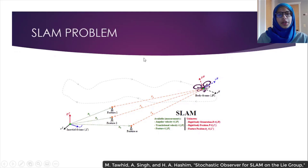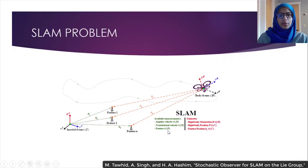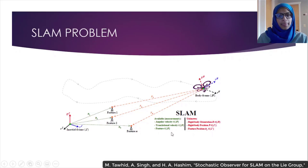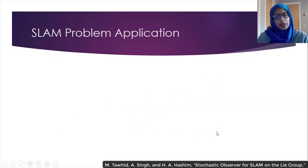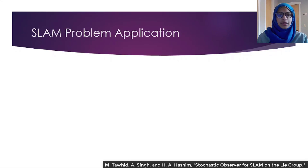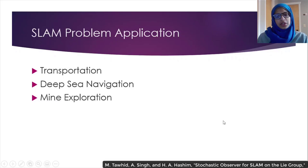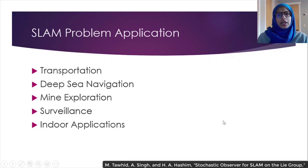With the SLAM problem, we are dealing with two categories of data as well: known measurements and unknown. The known variables are the angular velocity, translational velocity, and the features, which are the information in the body frame or the frame attached to the moving vehicle. The unknown variables are the rigid body's orientation, the rigid body's position, and the feature position defined with respect to the Earth frame. The SLAM problem is largely researched because it's applicable in many areas, including transportation, deep sea navigation, mine exploration, surveillance, indoor applications, and many others.